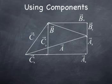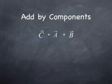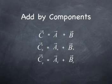So, you have still the equation C is A plus B. But if we look at it component by component, you can see that the X component of C is the sum of the X components of A and B. The Y component of C is the sum of the Y components of A and B.